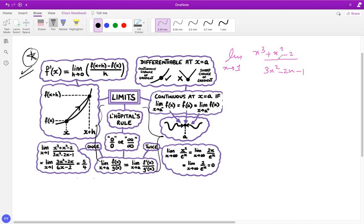So when you want to find this value, now basically, now you take x tending to 1, if I plug x as 1 here, so it is 1 plus 1 minus 2 over 3 minus 2 minus 1.